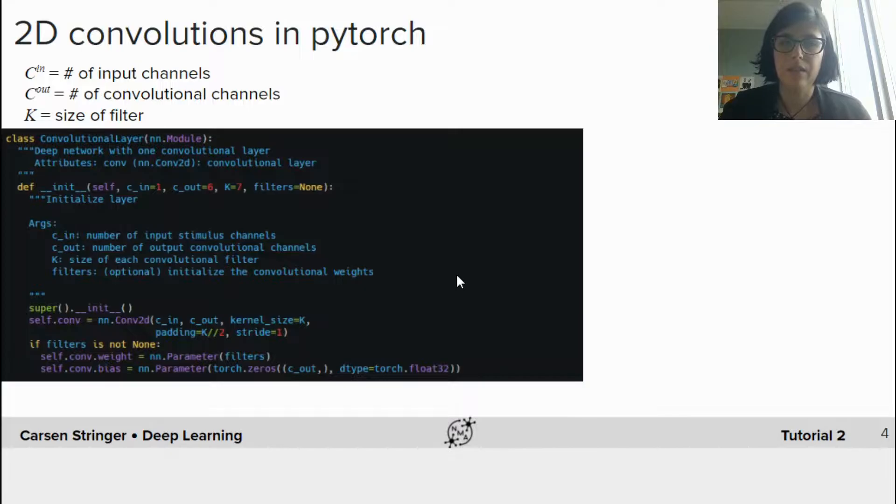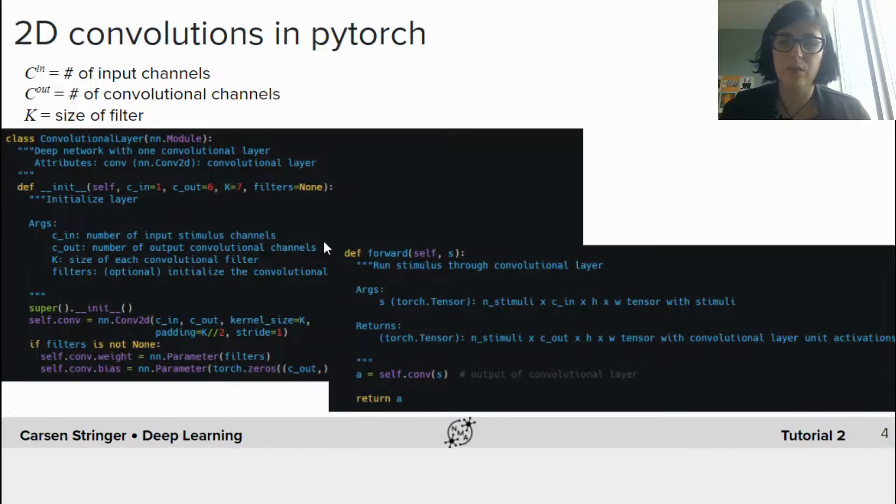And then we need to declare one more piece here, which is our forward step. So remember from last tutorial two, you have this init method here. And then you also have this forward method you need to declare for your neural networks. And so this forward method takes as input the stimulus s, and then it puts the stimulus into our convolutional layer and returns this output a, which is going to be number of stimuli by number of output convolutional channels by height by width.